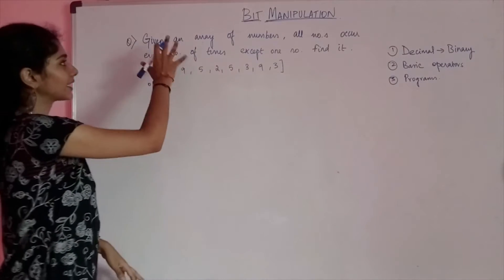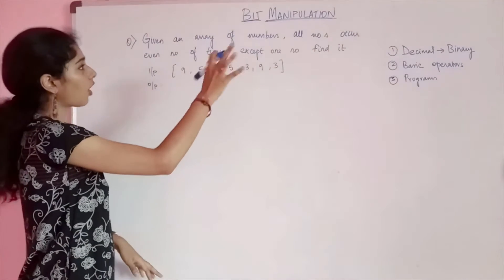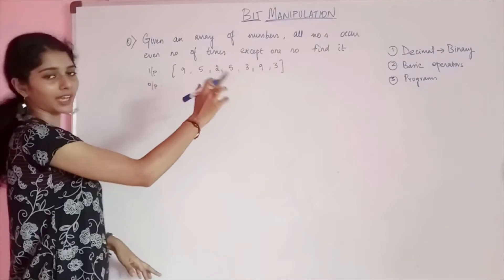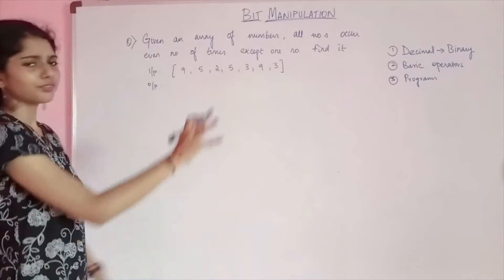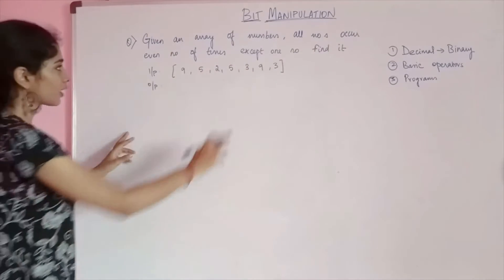Let's start with the first program. Given an array of numbers, all numbers occur even number of times except one number. Find the odd occurring number.